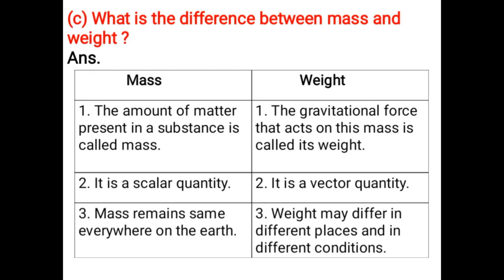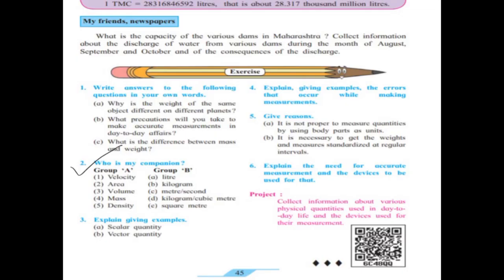Mass is a scalar quantity. Weight is a vector quantity. Mass remains same everywhere on the Earth. Weight may differ in different places and in different conditions.